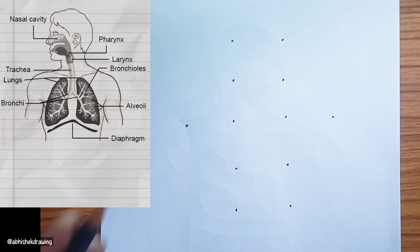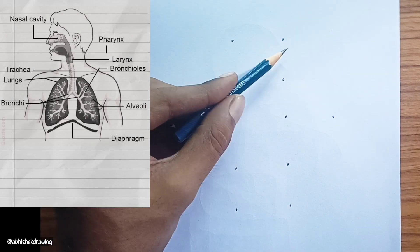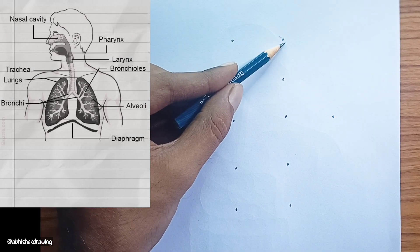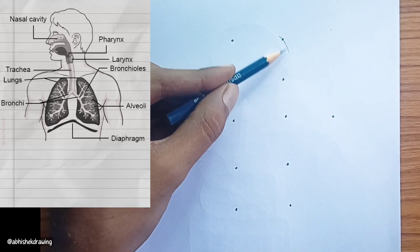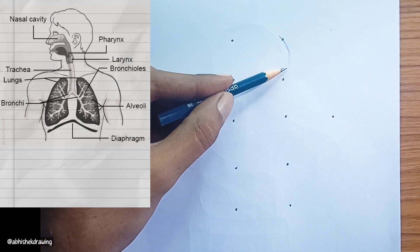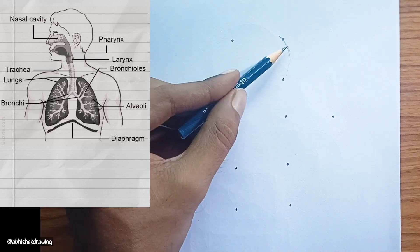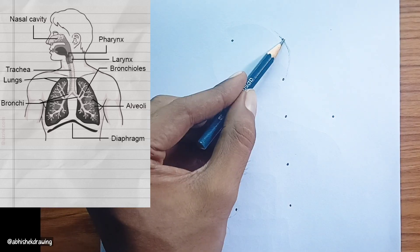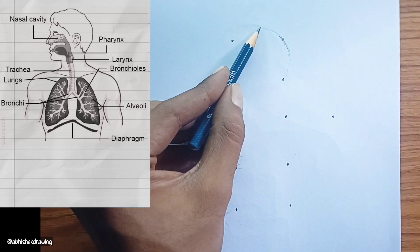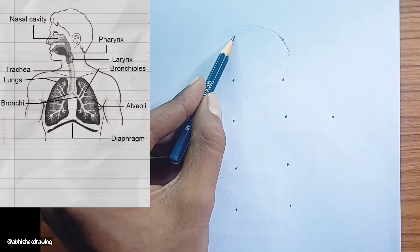This diagram illustrates the human respiratory system, which is responsible for taking in oxygen and expelling carbon dioxide. Here's an explanation of each labeled part.